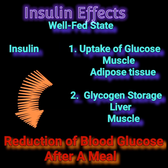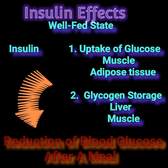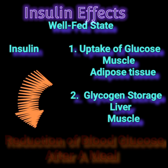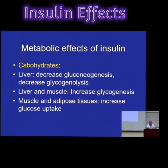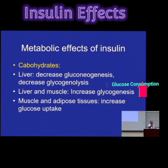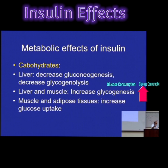These effects of insulin will ultimately reduce blood glucose after a meal. There are a variety of things that get activated and a variety of things that get inhibited. What gets activated is glycogen synthesis and glycolysis — two processes that consume glucose because there is plentiful glucose in the bloodstream.